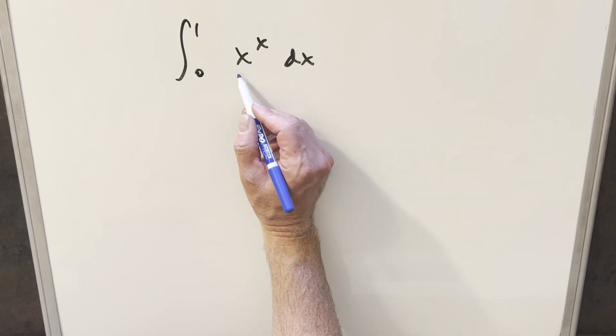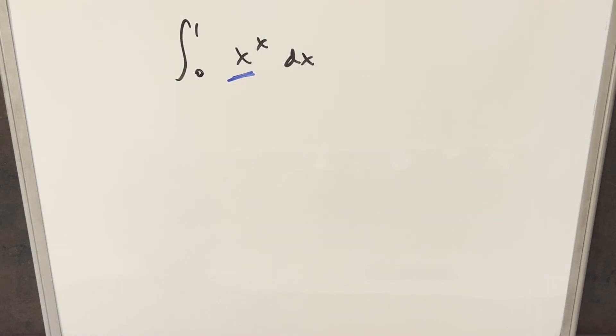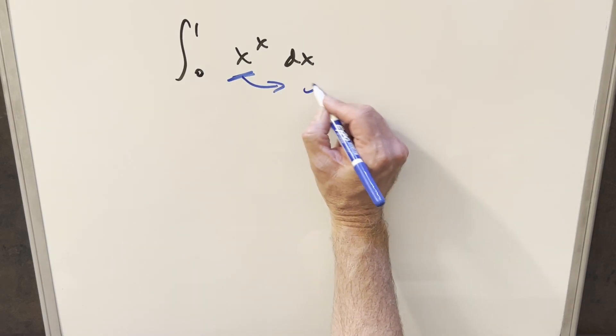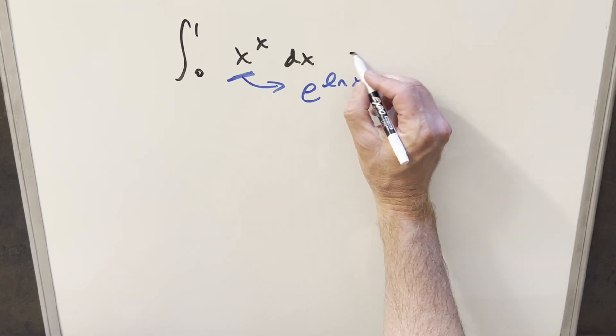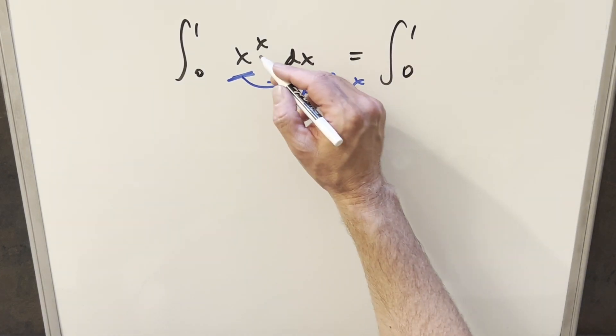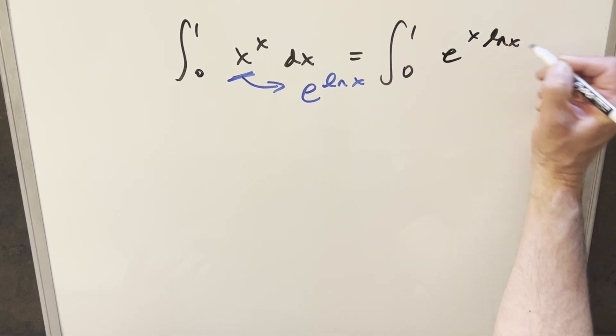To start with, we don't really like having x as our base and the exponent. This is going to be a problem. So what I want to use is this trick where I can take x and rewrite it as e to the ln x. Doing it that way, I can just rewrite the integral, plugging this in and distributing in the exponent. So I can write this as e^(x ln x) dx.